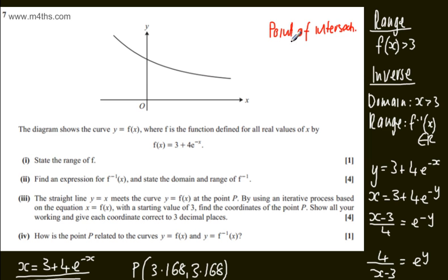Remember, with your inverse function, we're going to have graphically a reflection in the line y equals x. So our iterative process has found us this point P. It'll look something like this. This is the reflection in the line y equals x. We've got f of x and we have f to the minus 1 of x. That is the point P and it lies on the line y equals x. So in total, 10 marks for question 7.